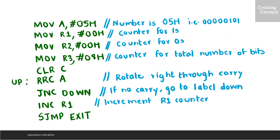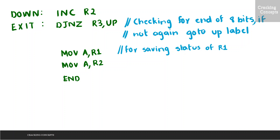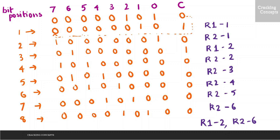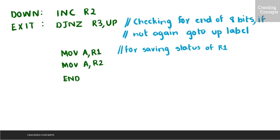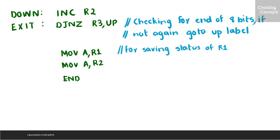Since 3 is not 0, we go for the next rotation, where 0 is copied to the carry flag and the carry flag bit is copied to the MSB. Again the carry bit is 0, so we increment R2, and R3 is decremented by 1, making R3 equal to 2. Since it is not 0, we go for the next rotation. For that rotation, this 0 is copied to the carry flag and this 0 is copied to the MSB. We have a 0 again, so R2 is incremented and R3 is decremented, making R3 equal to 0, which means the comparison is over.